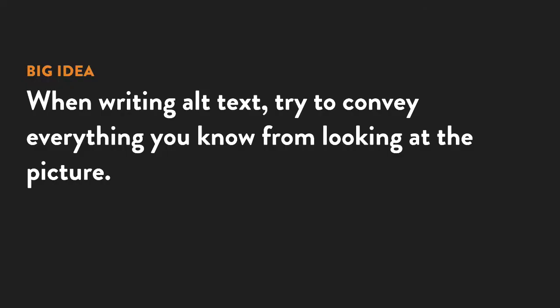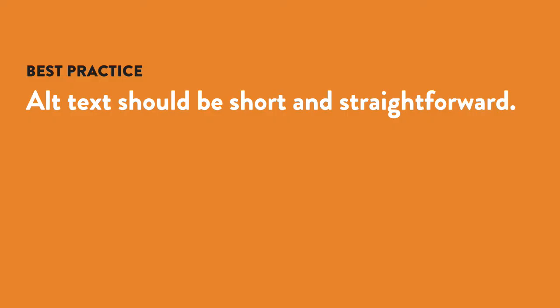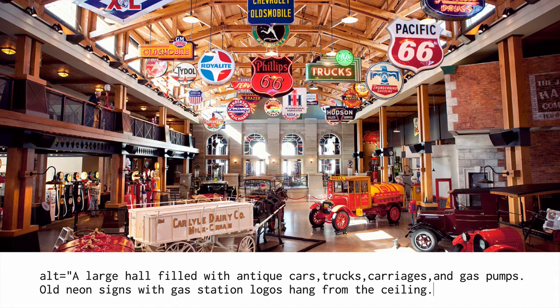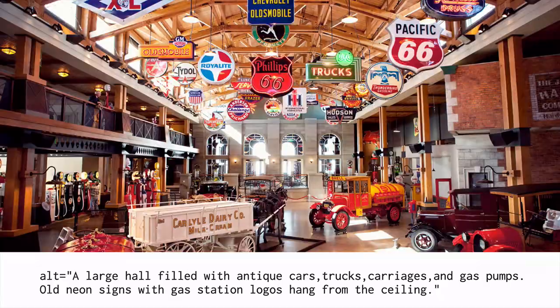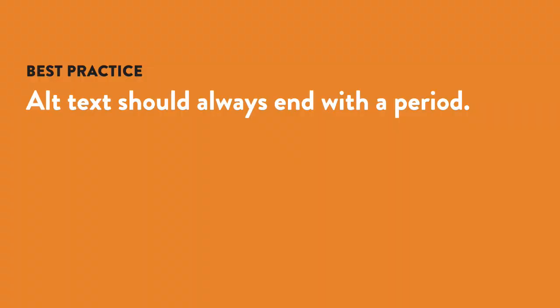When writing the alt text, you want to make sure the screen reader user knows all the things that you know from looking at the picture. Tell the users everything they need to know, but also try to keep it short and straightforward. Generally, you should try to keep it under 125 characters, as some screen readers will divide longer alt text into multiple chunks. Alt text should always end with a period, even if it's not a complete sentence, because this ensures that the screen reader will pause at the end of it.